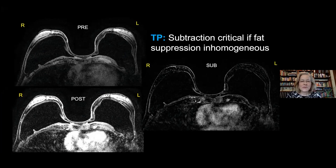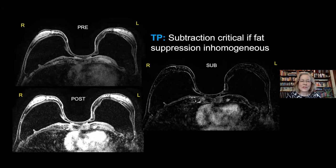There are circumstances in the United States where the technologist can't get adequate fat suppression. The most common time this occurs is when a patient has silicone implants, making it very difficult to get homogeneous fat suppression across both breasts. In that situation, I'd recommend acquiring the dynamic sequence without fat suppression—using more of a European model—and relying upon subtraction to look for areas of enhancement.